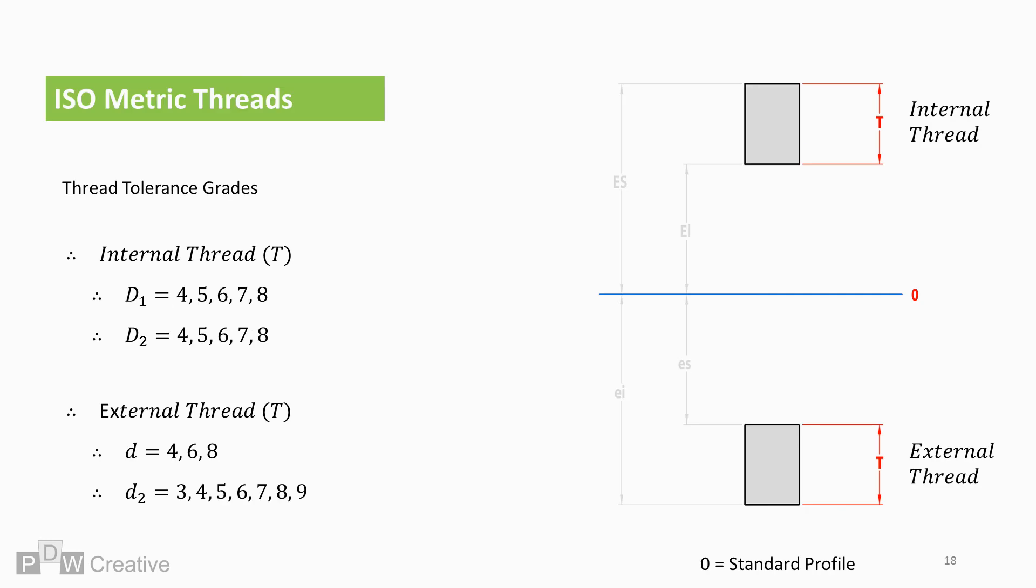Multiple tolerance options are available for each tolerance in diameter. These are known as thread tolerance grades. Smaller grade numbers offer the tightest tolerance. Larger tolerance grades may be selected due to cost or manufacturing difficulties.